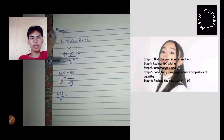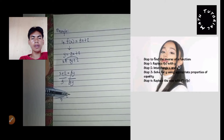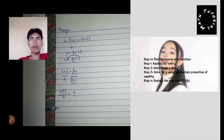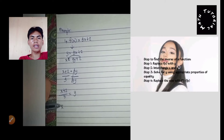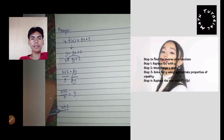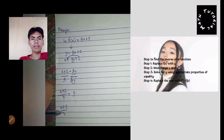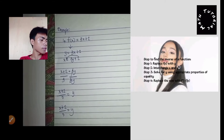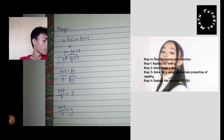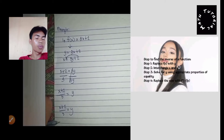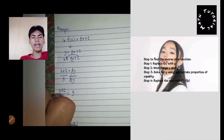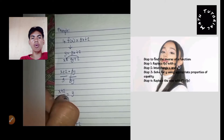So three y over three: you need to cancel it. Then the last step is you need to replace the result with f inverse of x. So the answer is f inverse of x is equal to x plus two over three.